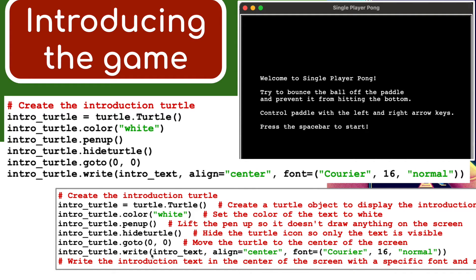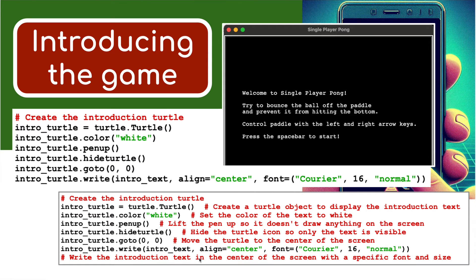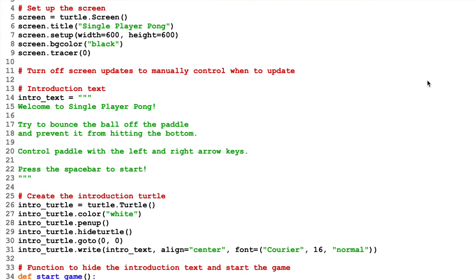Then we're going to use the .write() command to take that text which you saw on the previous slide - the intro_text - and that's what's going to appear. Align centered. Font is going to be Courier, sixteen point, normal - not bold. This line writes the introductory text in the center of the screen with a specific font and size. So those first 31 lines have been written and created.